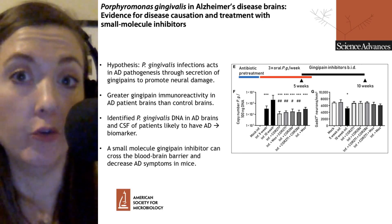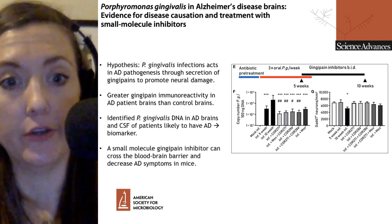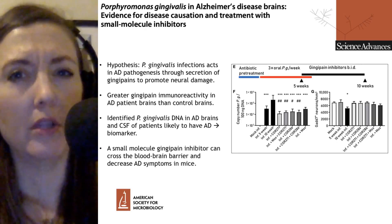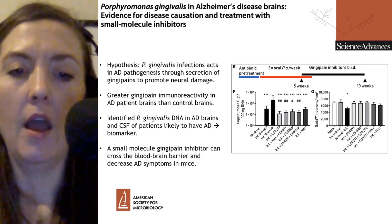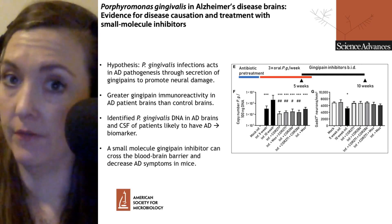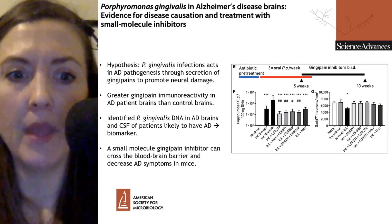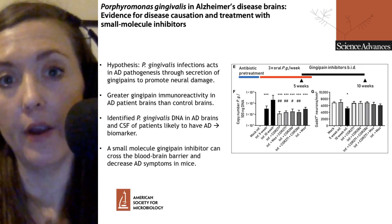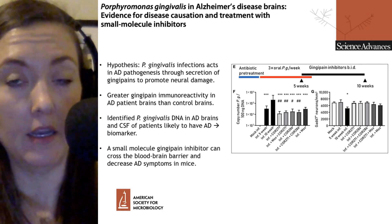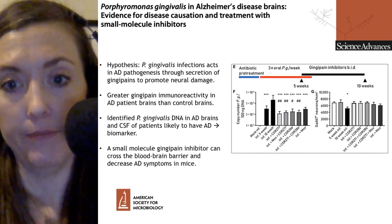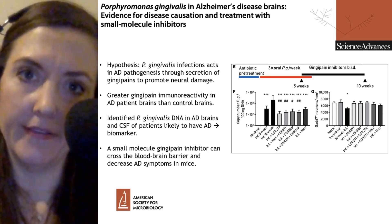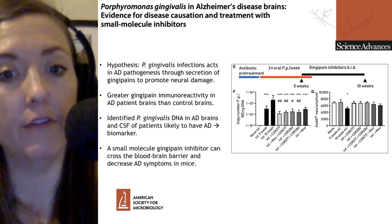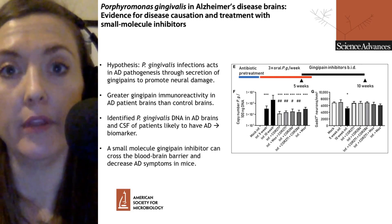In the mouse model, they took mice infected with P. gingivalis and treated them with a gingipane inhibitor — a small molecule that can stop that protease from acting within the host. This gingipane inhibitor can cross the blood-brain barrier, which is very important for activity in the brain. They found that it decreased symptoms in the mice, decreased the amount of bacterial DNA in the mouse brains, and increased neuron number — so there was less cell death. After 10 weeks there was a significant decrease in mouse neurons, and with addition of various inhibitor combinations, they were able to rescue neuron survival.